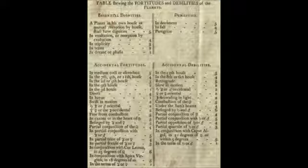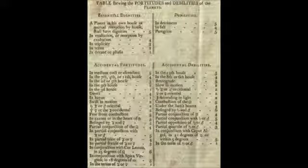Now for debilities: if the planet is in detriment, it will lose 5 points. If it's in fall, it will lose 4 points. And if it's peregrine, it will lose 5 points. Peregrine means when a planet has no control over its environment — for example, when a planet is in a sign where it doesn't rule, have triplicity, term, exaltation, etc. — so no dignities whatsoever. The planet is classed as peregrine. Referring to Ptolemy's table of essential dignities of the planets will explain all this to you.